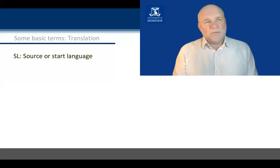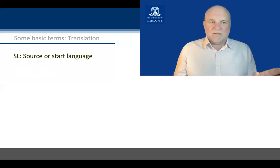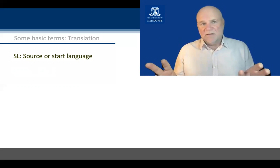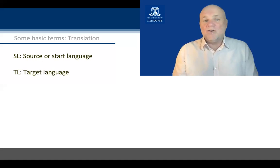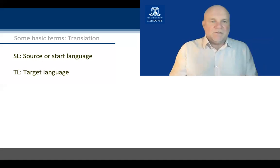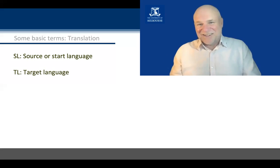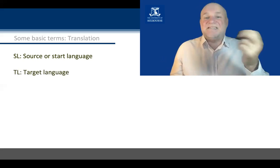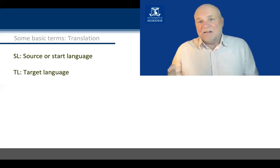More terms. Once we get the idea of going from ST to TT — from a start side to a target side — we just fill in the other terms. SL would obviously be your source or start language, and TL is your target language. Similarly, we could have SC, the start culture, and TC, the target culture.